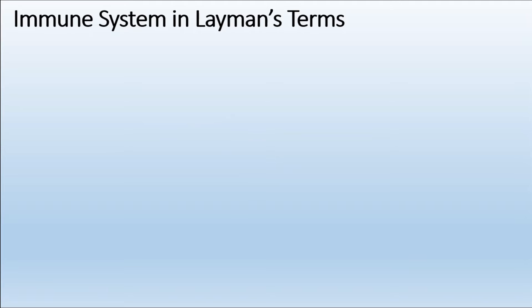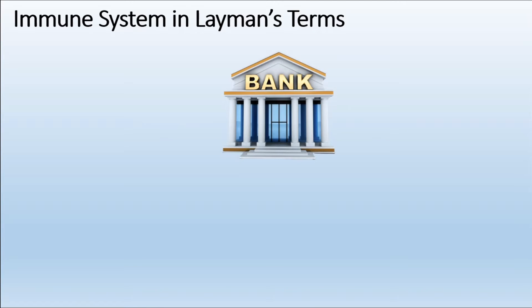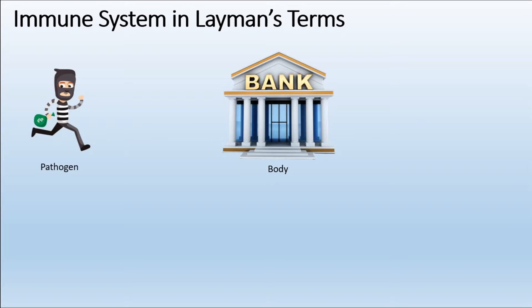Initially I will try to explain the immune system in the simplest way possible. As you can see on the screen, there is a picture of a bank. This bank can be represented as our body, and there is a masked person who is trying to enter this bank with the intention of robbing it — advancing towards the bank. In our case, that would be the pathogen.